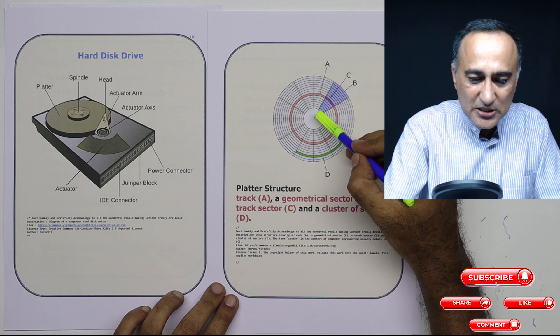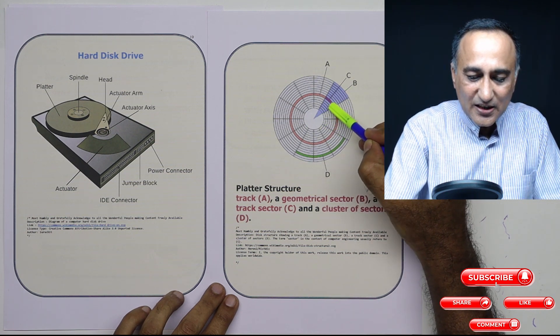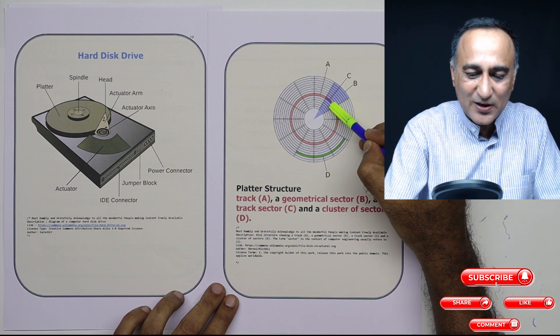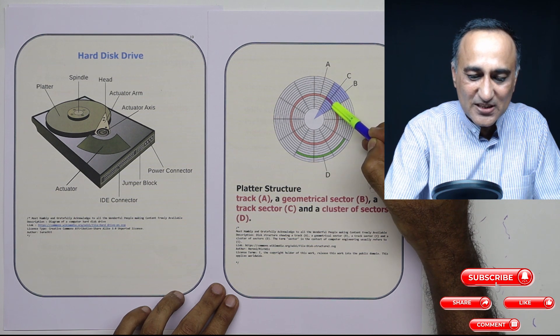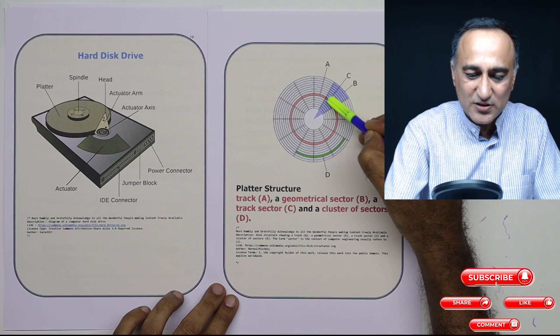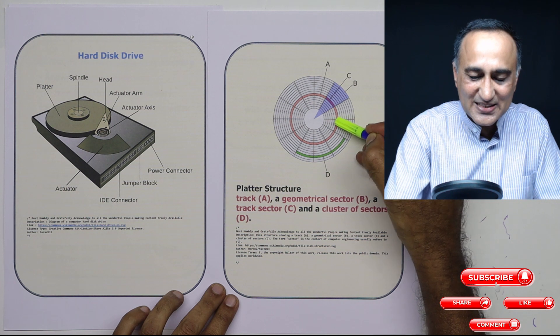Now if you look at this B, B represents a group of something called sectors. But before that, let's take a look at C. C represents this partition. If you see this pinkish part, C represents the sector of a given track. So this is known as a sector.